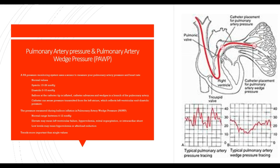Pulmonary artery pressure and pulmonary artery wedge pressure: a pulmonary artery pressure monitoring system measures pulmonary artery pressure and heart rate. Normal values are systolic 15 to 26 mmHg, diastolic 5 to 15 mmHg. A balloon at the catheter tip is inflated, and the catheter wedges in a branch of the pulmonary artery to sense pressure transmitted from the left atrium, reflecting left ventricular end-diastolic pressure. The pressure measured during inflation is the pulmonary artery wedge pressure, with normal ranges of 4 to 12 mmHg. Elevated values may indicate left ventricular failure, hypervolemia, mitral regurgitation, or cardiac shunt. Low levels may mean hypovolemia or afterload reduction. Remember, a single reading is less important than the trend.